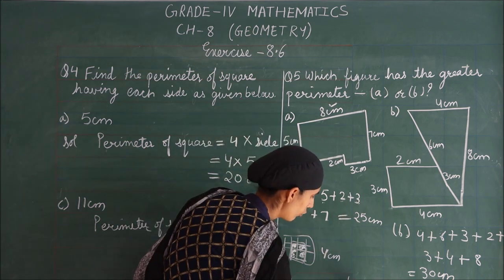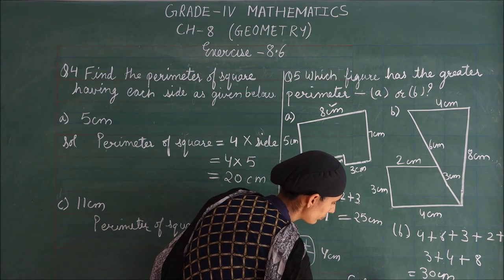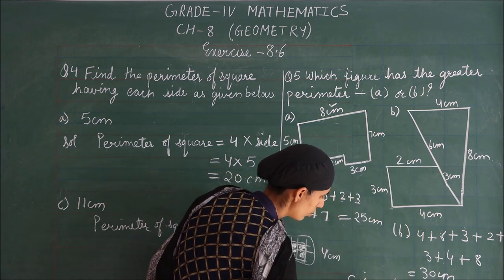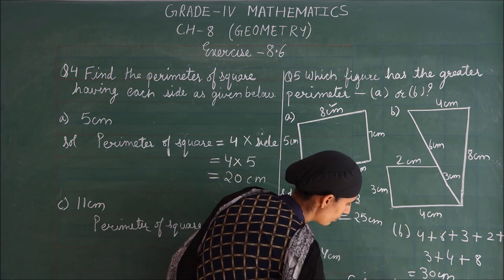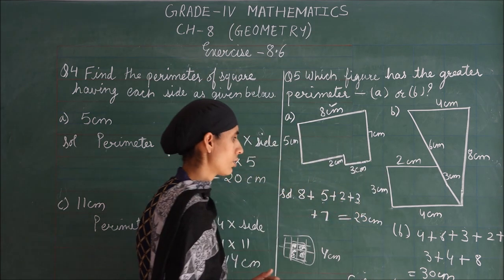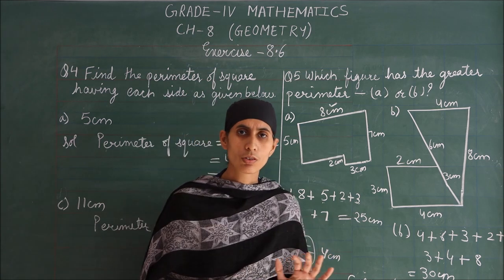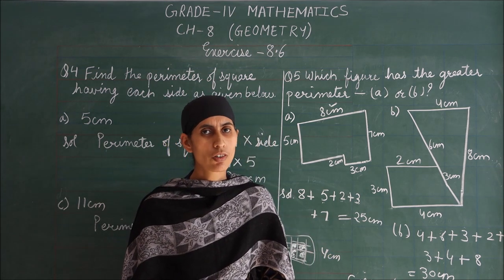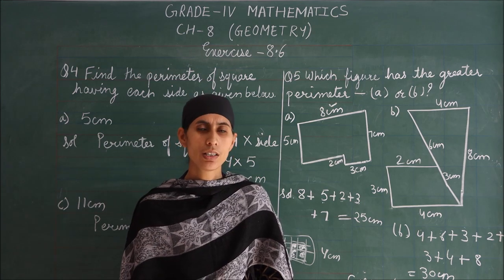So you can write: figure B has more perimeter. I hope you understand questions 4 and 5, and you can try question 3 yourself. If you have any query, you can contact me. Thank you.